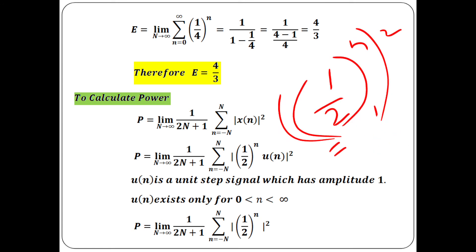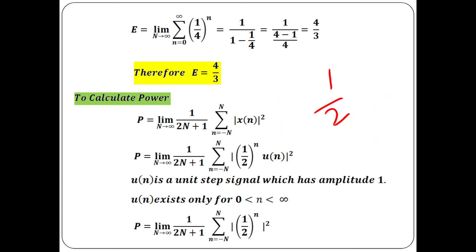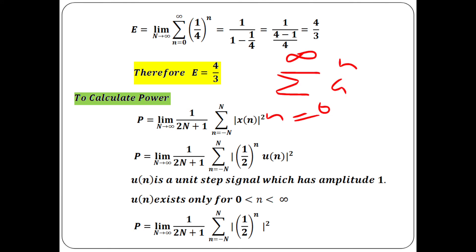Using the formula: summation from n = 0 to ∞ of a^n = 1/(1 − a). With a = 1/4, taking LCM gives 1/(1 − 1/4) = 4/3. So energy = 4/3, which is a finite value.